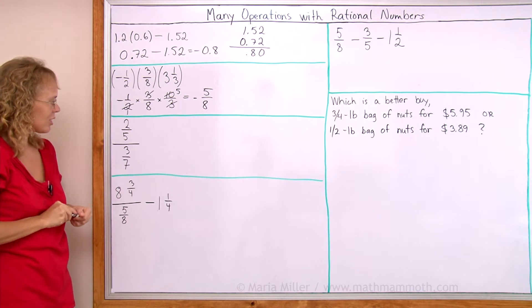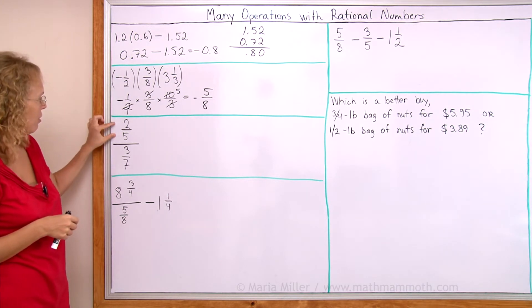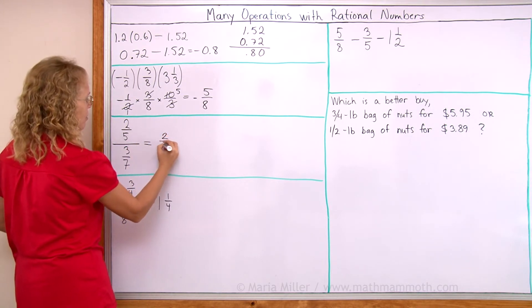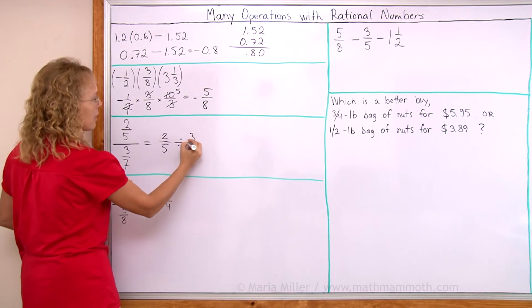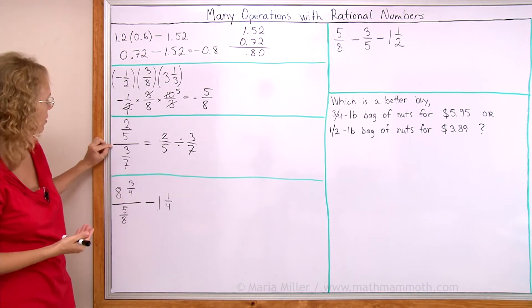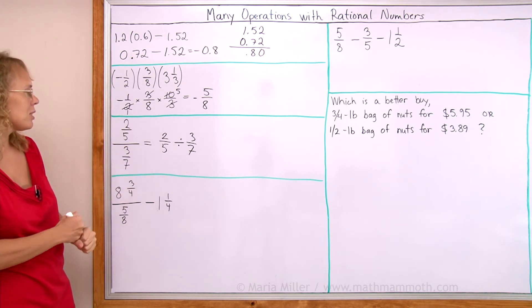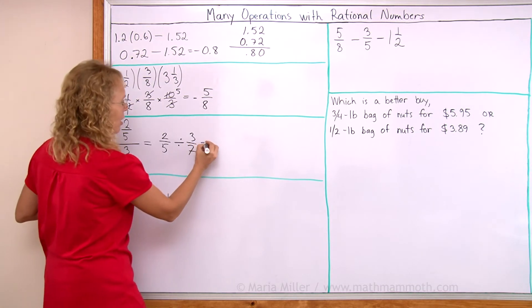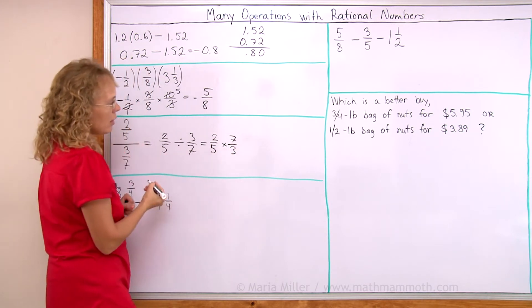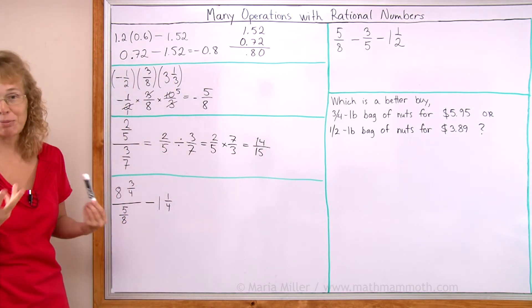This here might look strange if you haven't seen it before. It's called a complex fraction. But all it is, is a fraction divided by a fraction. So we can calculate it by writing the first fraction, then a regular division symbol like that, and the other fraction. So these are the same thing. Division written with this symbol or division written with that symbol. But this is called a complex fraction when it is written in this form. Now, we just use regular division of fractions. This is changed into a multiplication. And this is flipped. And now here, nothing simplifies. So I just multiply and get 14 over 15. So it was simple after all, right?